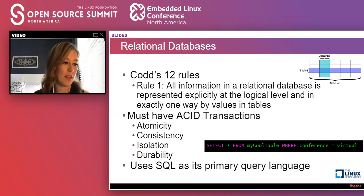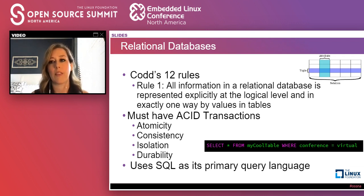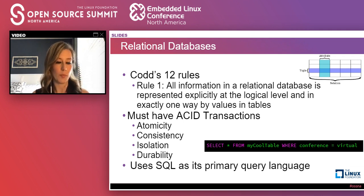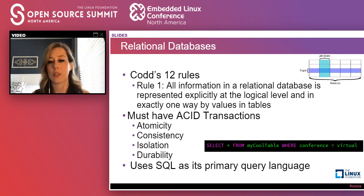Let's jump into our very first database type: relational databases. When relational databases were developed in the 70s at IBM by Codd and his team, they developed not just the technology but 12 rules of what makes a relational database. Rule one: all information is represented explicitly at the logical level in exactly one way by values in tables — a relation (table), with attributes (columns) and tuples (rows).